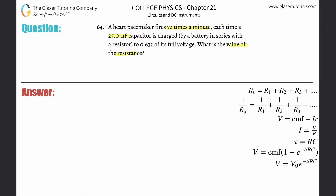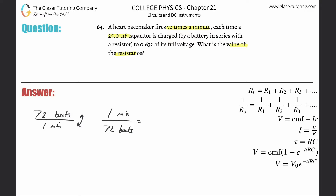In order for the pacemaker to go off 72 times a minute, what's the period between beats? If it goes off 72 beats per one minute, flipping this tells us the time per beat. So 1 over 72 gives us 0.0139 minutes per beat.